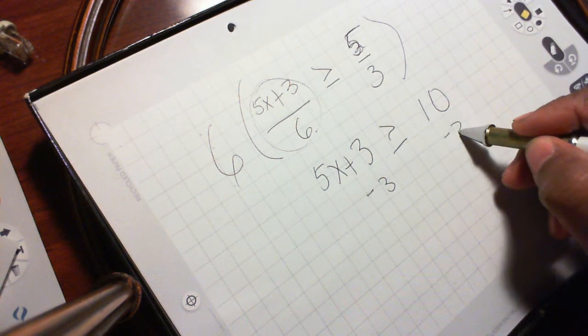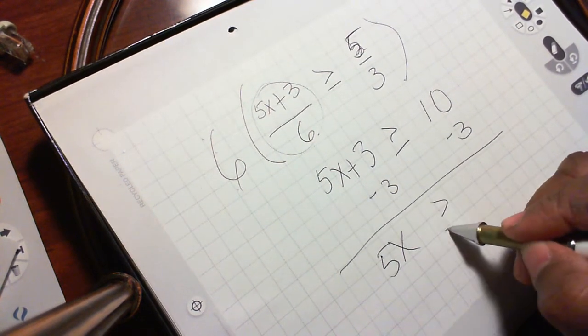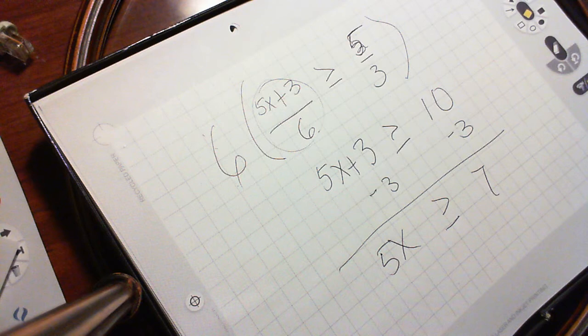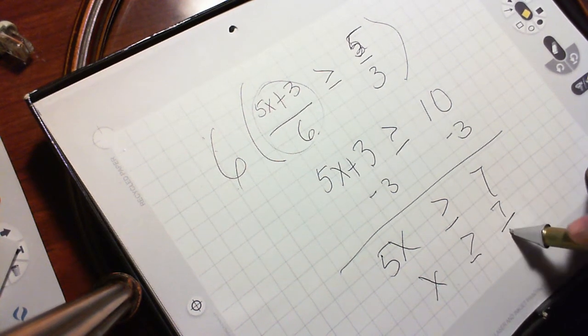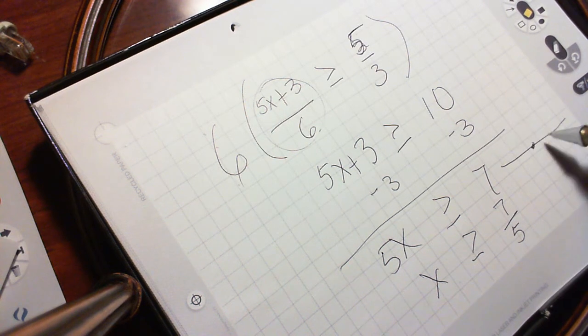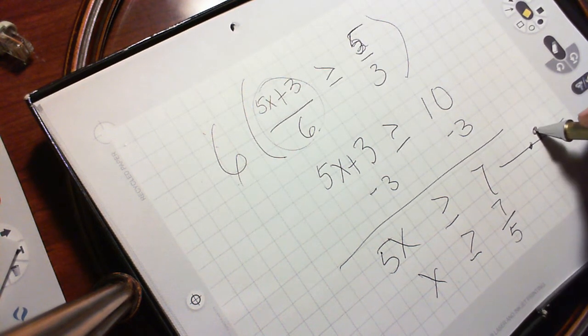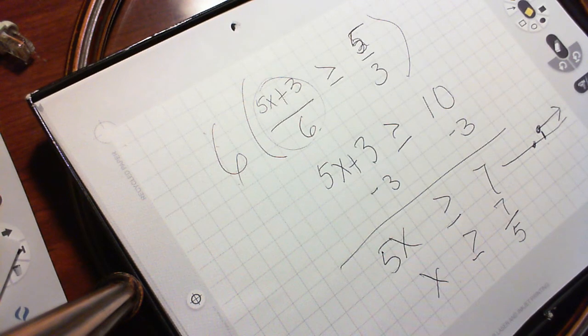Now I'm going to take out a 3 from both sides. So I have 5x is greater than or equal to 7. x is greater than or equal to 7 over 5. So if you're looking at the line here, this is 0, this is 7 over 5. So we are this direction.